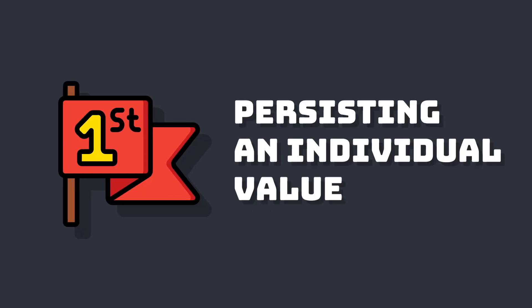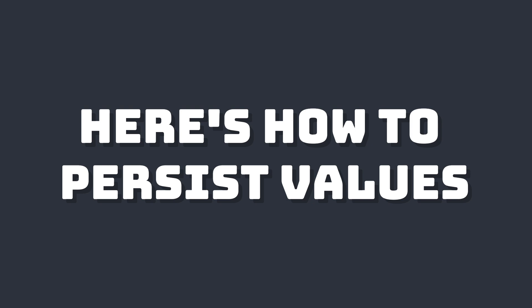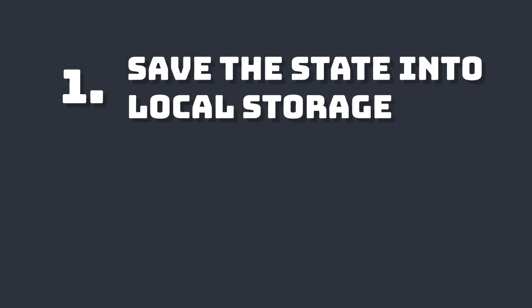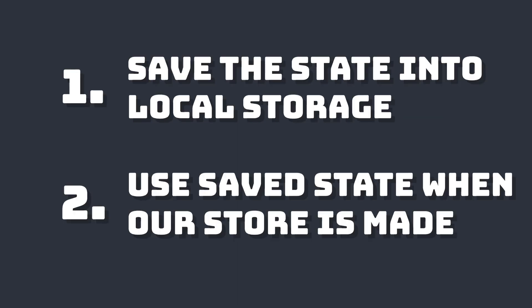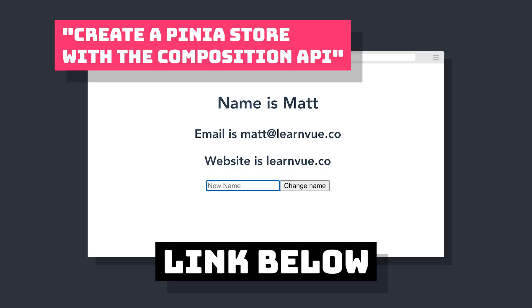A common use case for this is storing someone's authentication state or preferences, so when they come back to our app, they're already logged in with all of their set preferences. Let's first take a look at persisting an individual value. I'm going to be using the user store that I created in my last Pinia video, so if you're new to Pinia or want to see how we got here, make sure to check out that video.